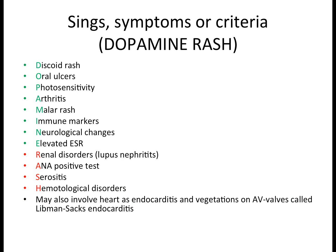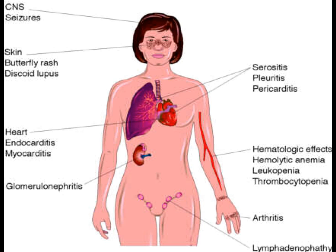To remember all these signs and symptoms, a simple mnemonic can be used: DOPAMINE RASH, which covers most of the diagnostic features seen in SLE. Additionally, Libman-Sacks endocarditis can occur, where autoimmunity affects the bicuspid and tricuspid valves causing vegetations.